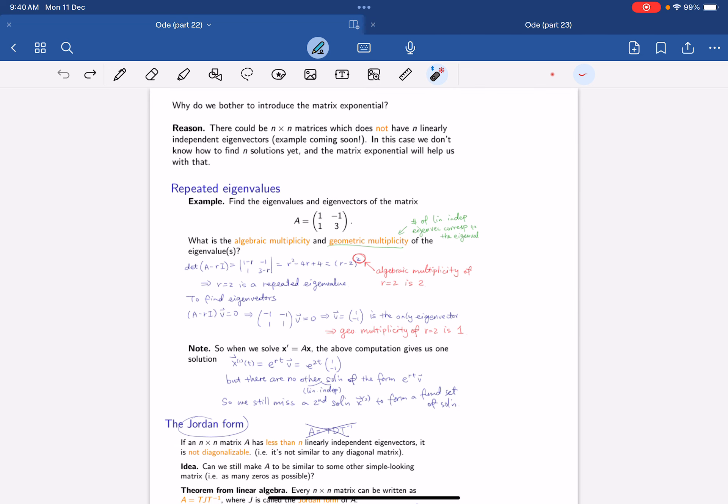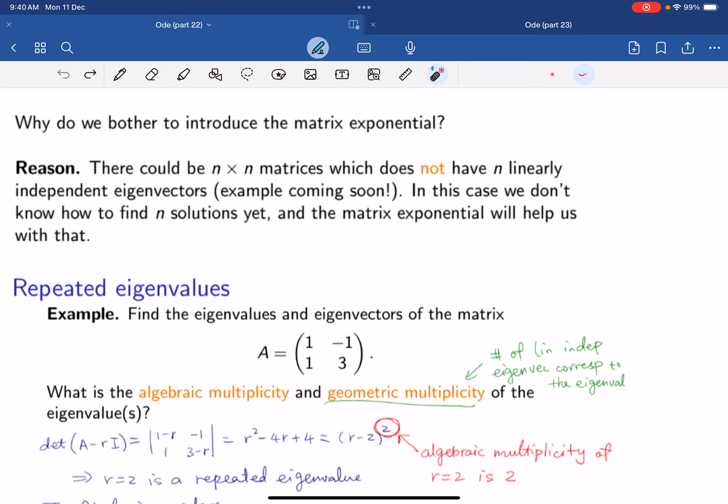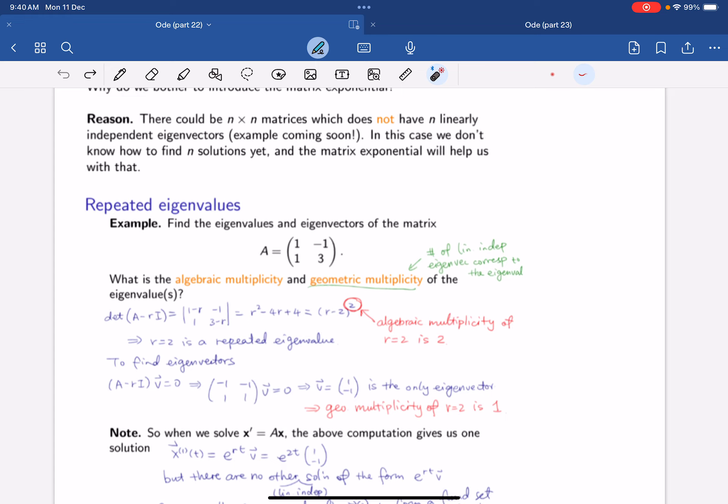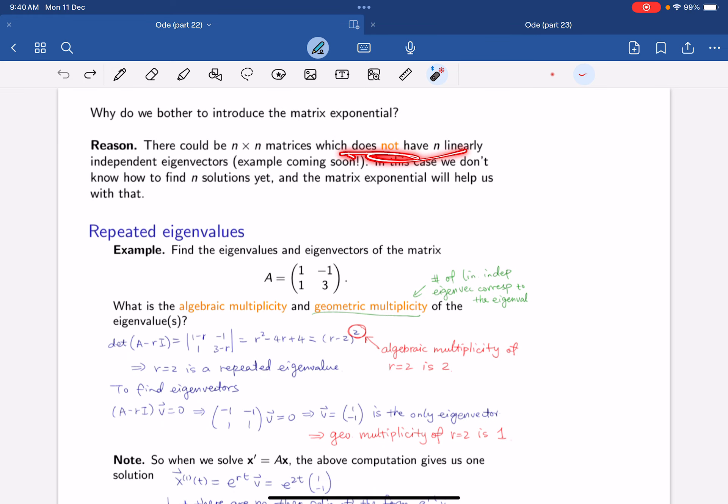So now we really ask the question of why do we bother introducing the matrix exponential? Well, if we know it's diagonalized, if we know there's n linearly independent eigenvectors, then we can diagonalize it. But sometimes they don't have n linearly independent eigenvectors. And then we won't be able to find the solution, because our case is distinct, real, and complex conjugate. In that next case, then there will be repeated eigenvalues.